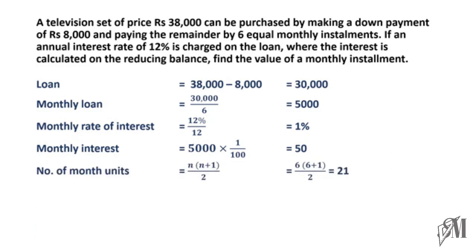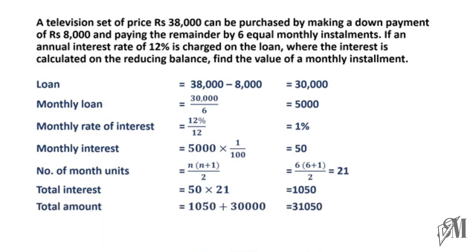Now the number of month units is calculated using the formula n(n+1)/2, where n is the number of installments — 6 in this case. Substituting gives 21 month units. The total interest is 21 multiplied by 50 rupees, which equals 1,050 rupees. Adding the loan (30,000) and total interest (1,050) gives a total amount of 31,050 rupees. Dividing by 6 installments gives a monthly installment of 5,175 rupees.